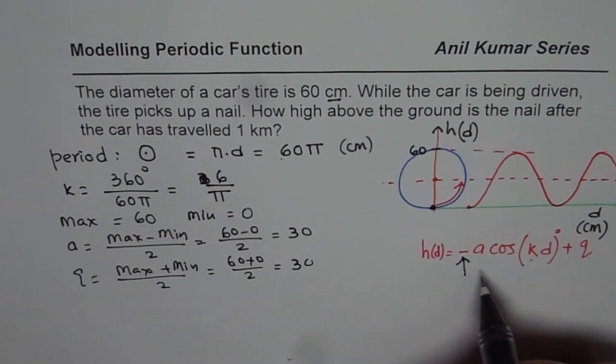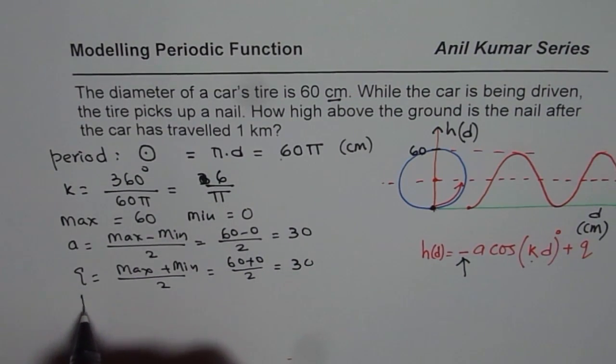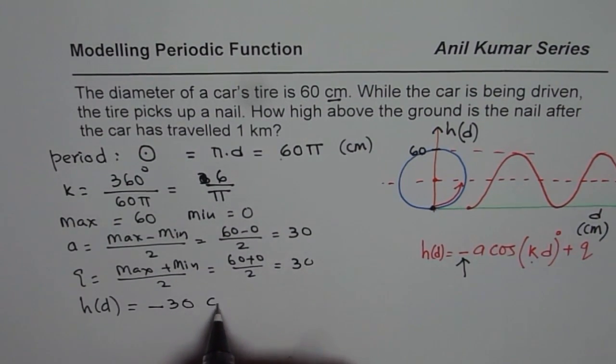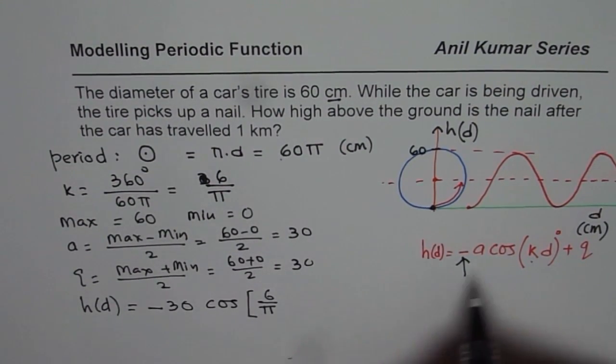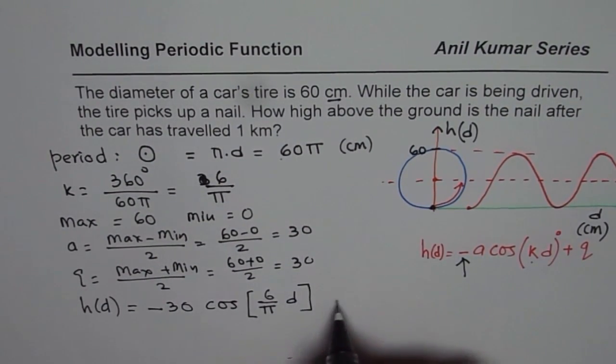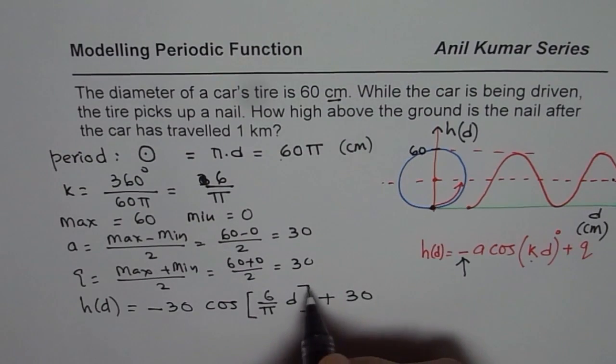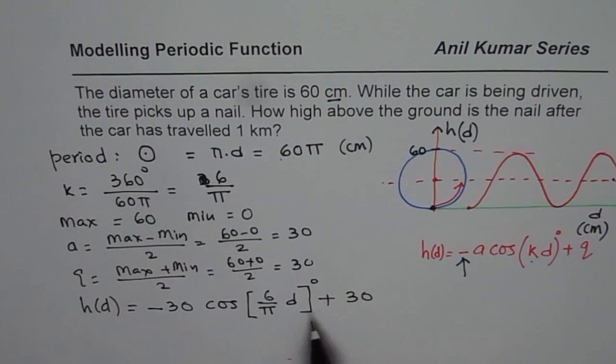Now, phase shift. Since we have taken this negative sign, we are saying that the cosine function starts from the minimum. That takes care of the phase shift. Once you put all these things together, you can say the height of the nail h with respect to distance d in centimeters is equal to minus A value is 30, cos of k value is 6 over π, times distance d, which travels, plus q, this height, which is half of this diameter, which is 30. And the units are degrees for you. So that is how you can write the equation.